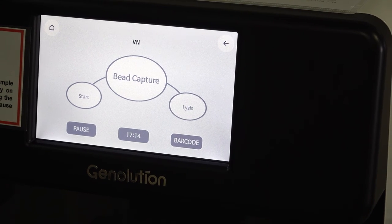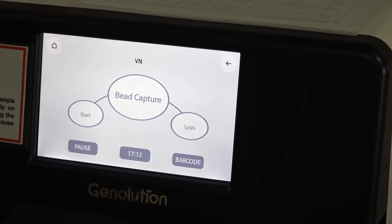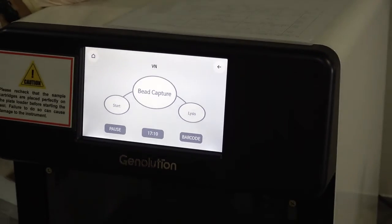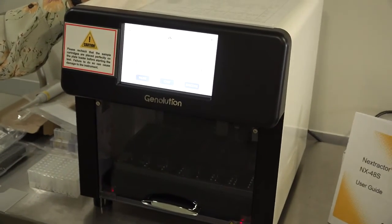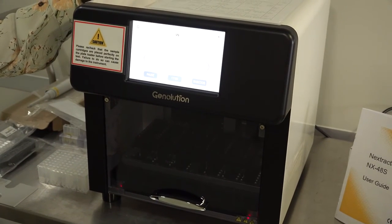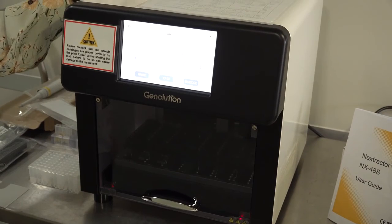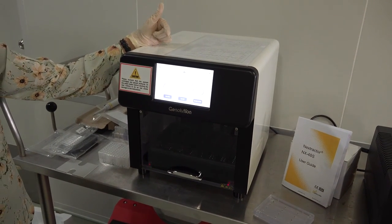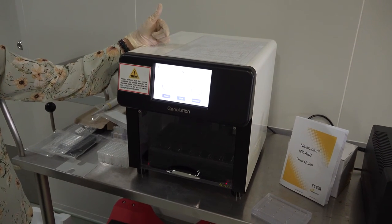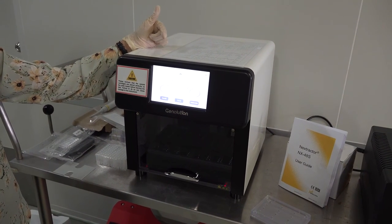You will start, you will have a bead capture, lysis and then there will be an elution step. That basically covers the operating procedure of this particular machine which is the Nextractor NX48S from Genolution. Thank you very much for watching the video and we will proceed to the actual lab practice in our BSL-3 laboratory. Thank you very much.